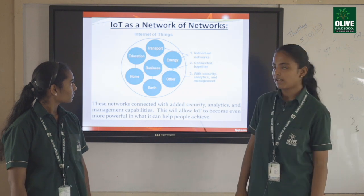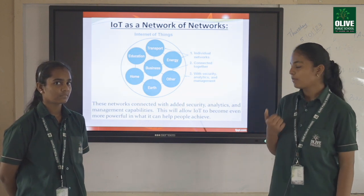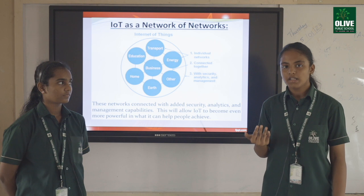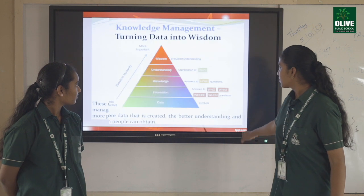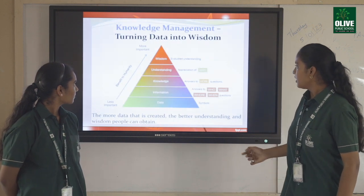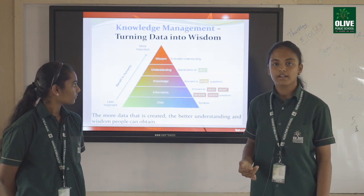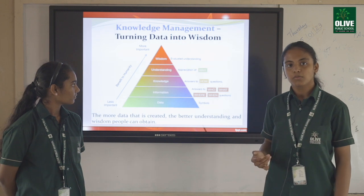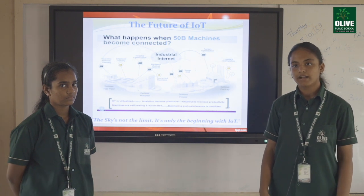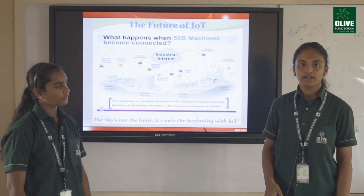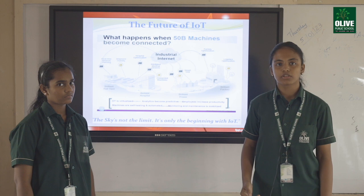IoT is a network of networks. IoT helps with business, which can be concluded as the following: Transport, Education, Energy, Home, and many other things. Knowledge management — when IoT is used, people can understand data better and get more wisdom. More data means more wisdom. The future of IoT: we can conclude that as the population increases, so does the number of connected devices. We can understand that the world has no limits and there is always more to learn.